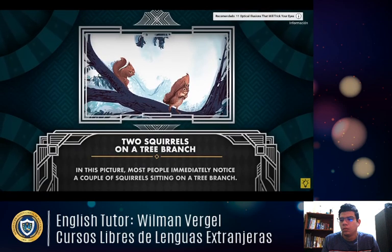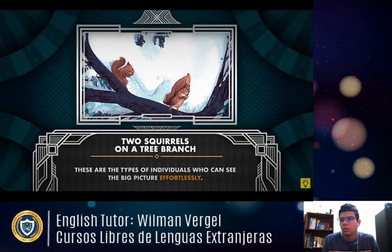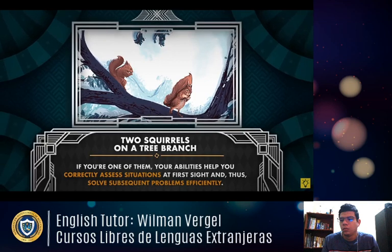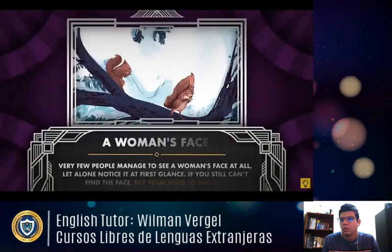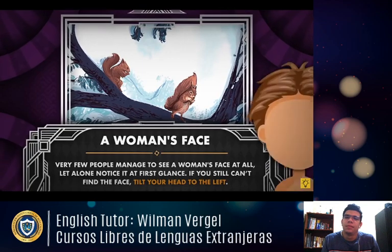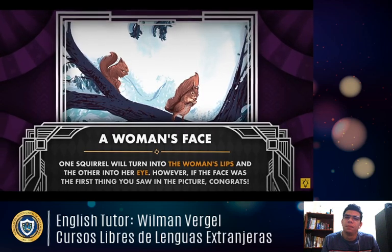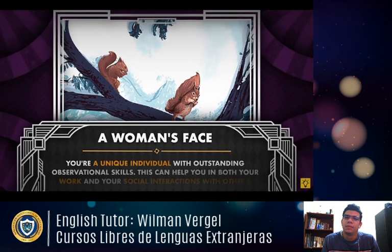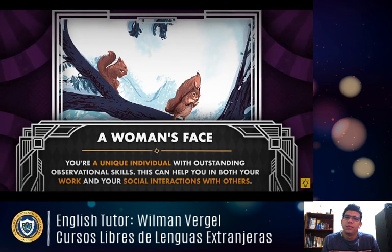Two squirrels on a tree branch — most people immediately notice a couple of squirrels sitting on a tree branch. These individuals can see the big picture effortlessly, correctly assessing situations at first sight. A woman's face — very few people manage to see a woman's face at all. If you still can't find it, tilt your head to the left — one squirrel will turn into the woman's lips and the other into her eye. If the face was the first thing you saw, congratulations — you're a unique individual with outstanding observational skills.